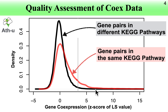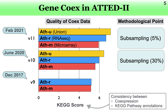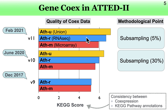We named this co-expression quality metric the KEGG score, because we use KEGG pathway annotation. Using this KEGG score, we can easily compare co-expression quality. As an example from our database ATH2, the current version 11 has a better KEGG score than previous versions, confirming that the current version is better. Additionally, in the case of Arabidopsis, RNA-seq-based co-expression is better than microarray-based co-expression, showing this quality assessment is quite useful.